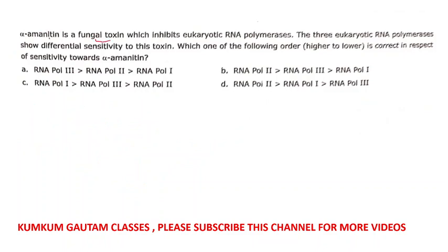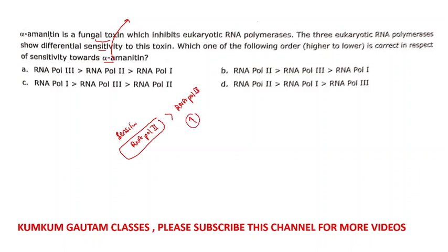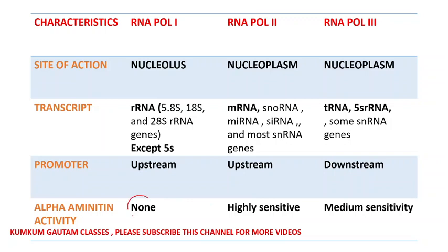Alpha-amanitin is a fungal toxin which inhibits eukaryotic RNA polymerases. The three eukaryotic RNA polymerases show different sensitivity to this toxin. RNA polymerase II is the most sensitive — even a small amount of toxin affects it. RNA polymerase III has moderate sensitivity — it requires a higher amount of toxin. RNA polymerase I is insensitive — there is no effect on it. So the correct order of sensitivity is: RNA Pol II > RNA Pol III > RNA Pol I.